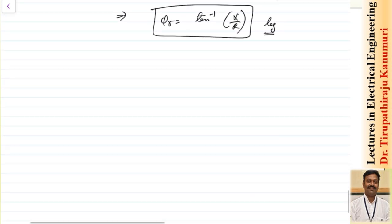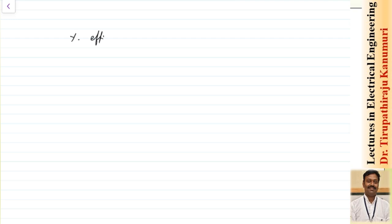For efficiency, the percentage efficiency is calculated as: P / (P + losses) × 100, where P is the three-phase receiving end power and the losses equal 3·Ir²·R, since only resistance dissipates power in the short transmission line.